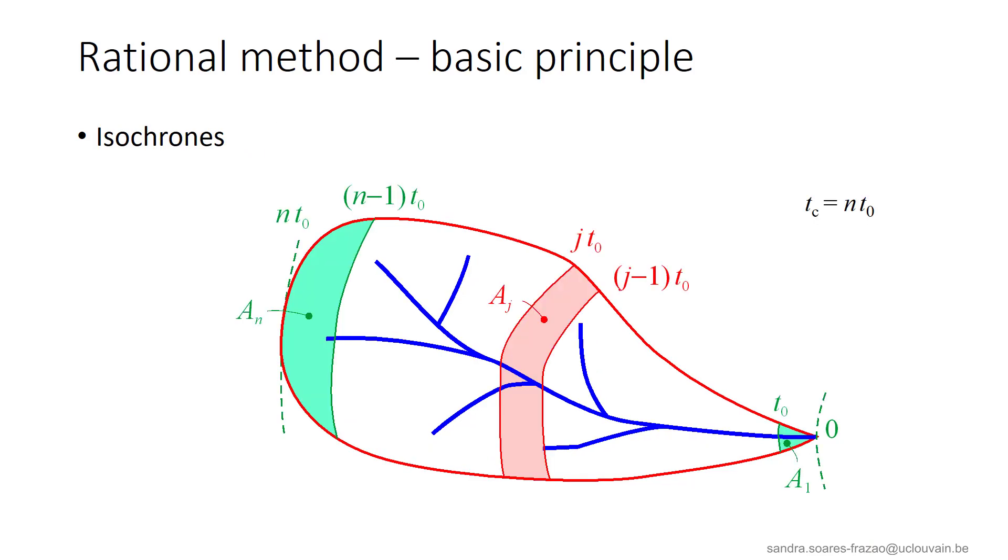We can draw isochrones that are lines connecting the points in a watershed that have equal travel times to the outlet. The most remote isochrone represents the time of concentration Tc, which is n times T0 in the present example. We define Aj as the area between two successive isochrones, for example, J-1 times T0 and JT0.